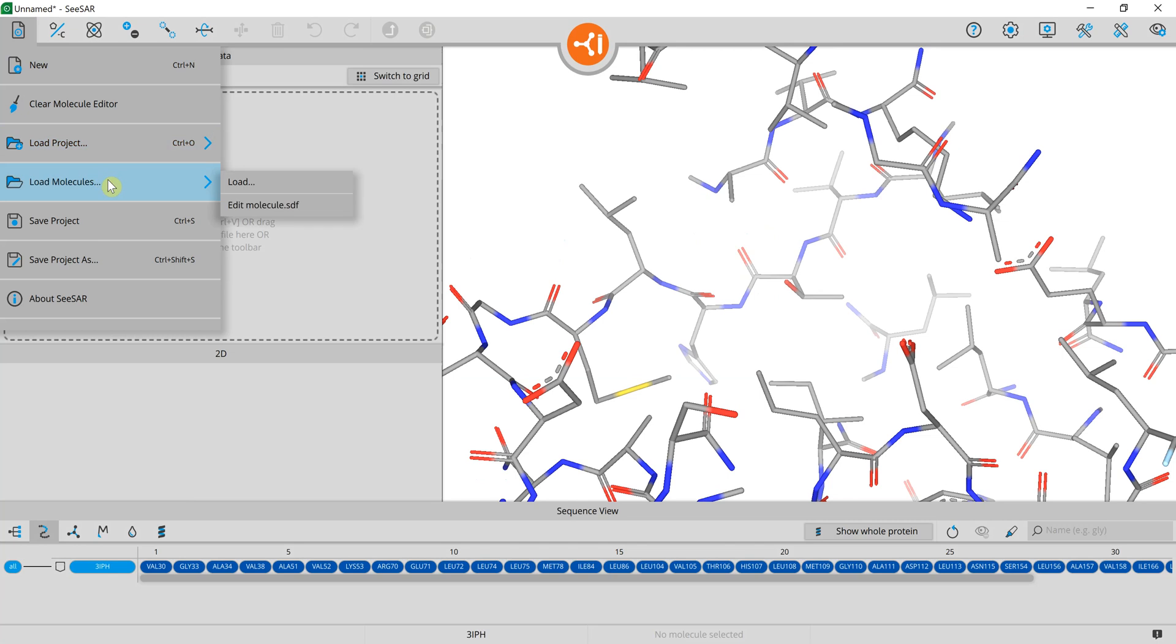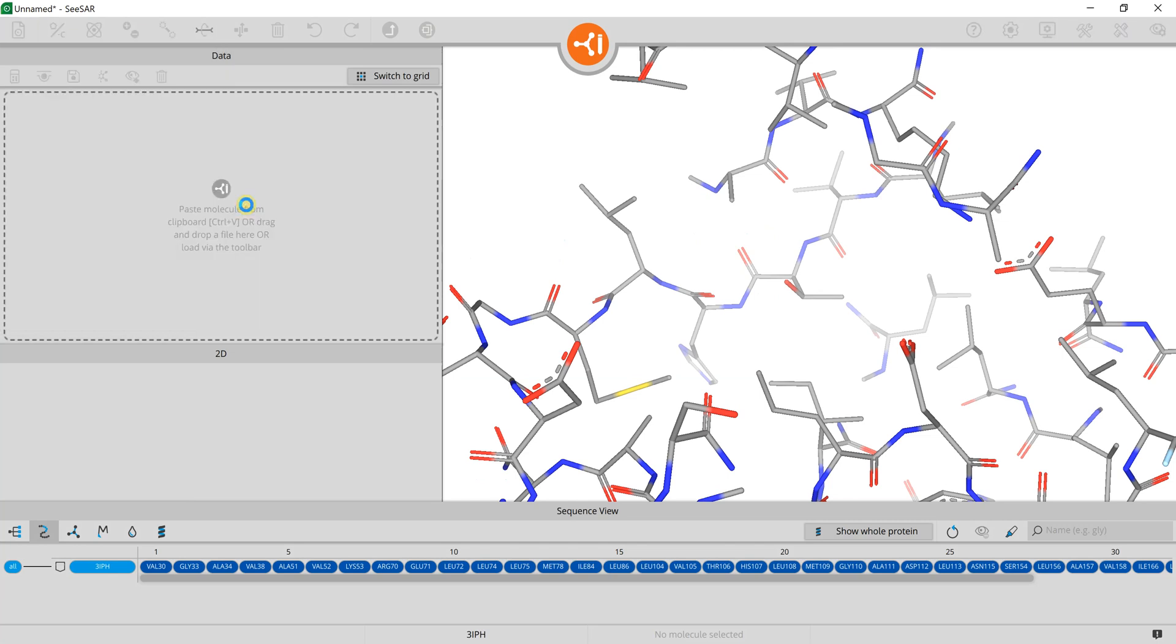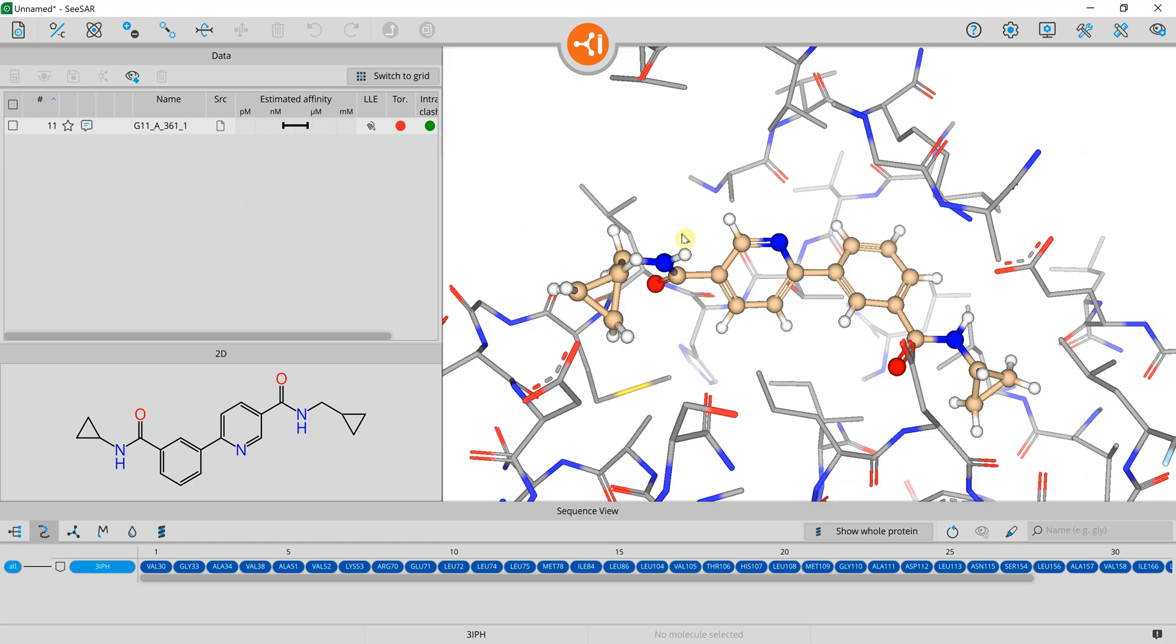We load a ligand from a file into the editor mode and inspect where around the ligand there is space to grow into.